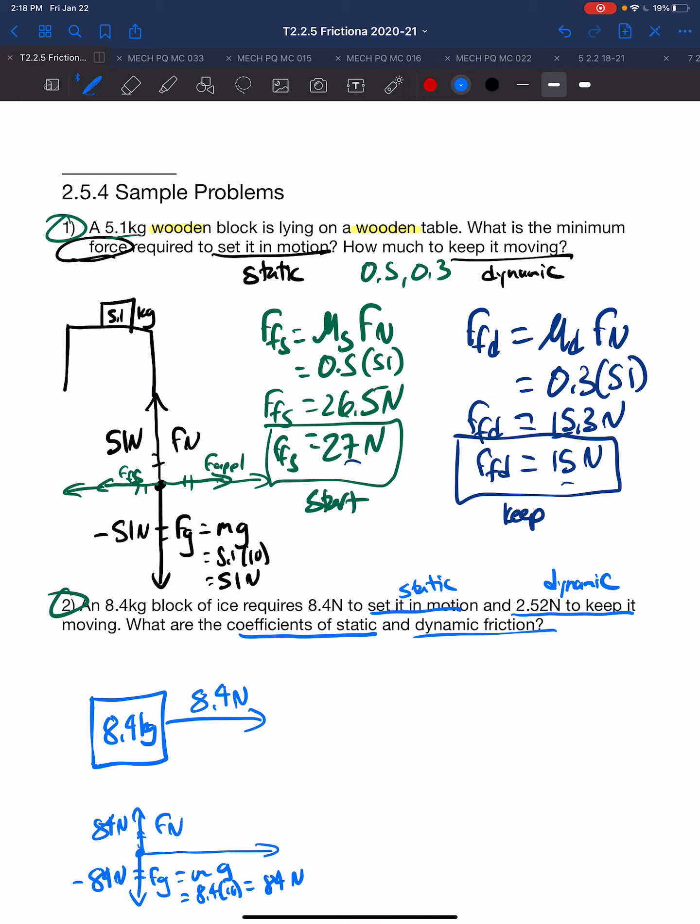We are told that the force applied is 8.4 newtons to set it in motion. At that instant before it breaks free, the force of friction static is minus 8.4 newtons. Now to find mu static, the definition of mu static is the ratio of the force of friction static to the force normal. The force of friction static is 8.4 newtons, the normal is 84 newtons. Newtons cancel, and we are left with 0.10 as the mu static. Two significant digits in both and two significant digits in our mu static.